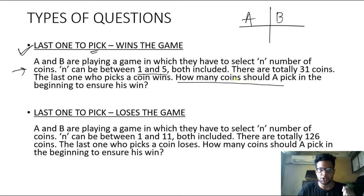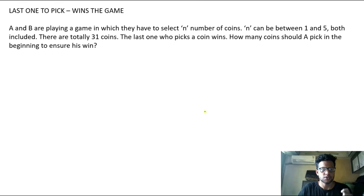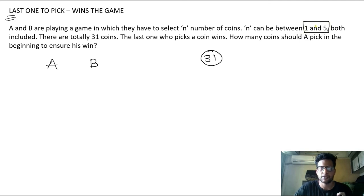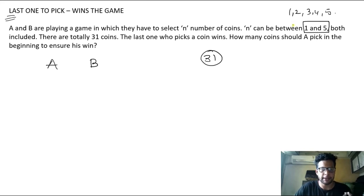If you are new to this concept, make sure you pause the video and give it a try. So in this first question — last one to pick coins wins the game — we have two players A and B with a total of 31 coins. Any player can pick n number of coins, where n can be 1, 2, 3, 4, or 5. A is starting the game. The question is how many coins should A pick to ensure he wins, meaning he picks the last coin.